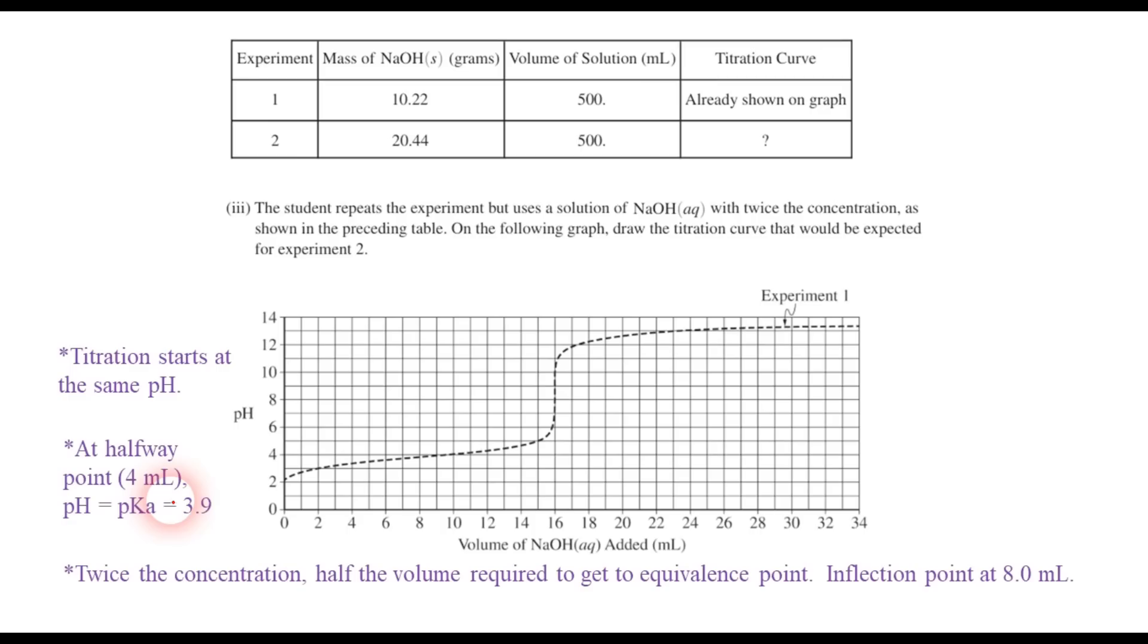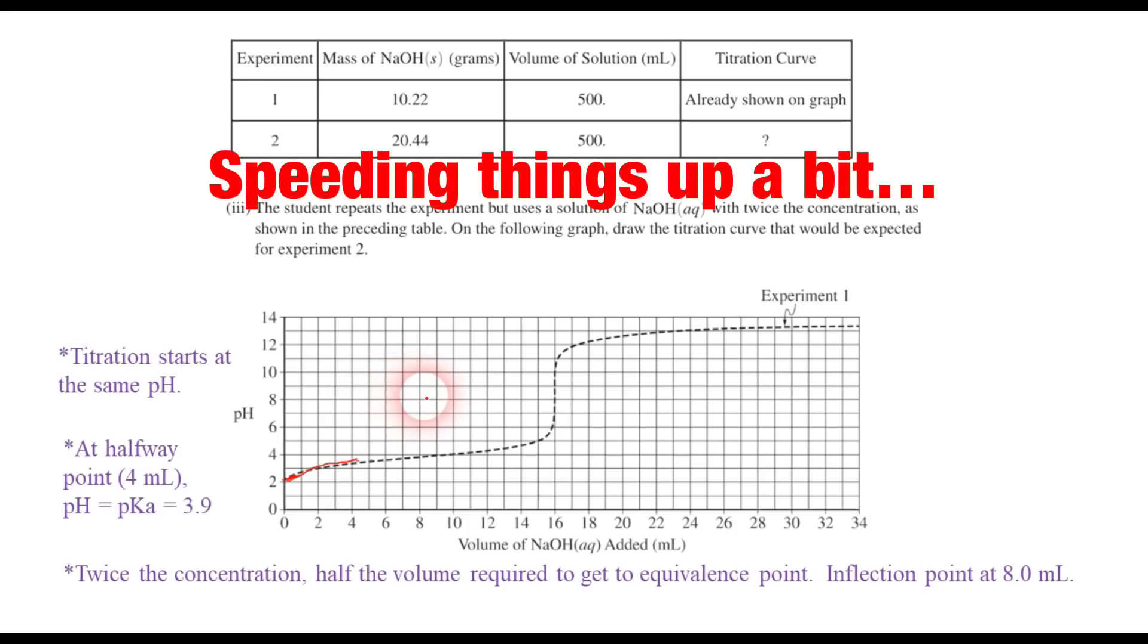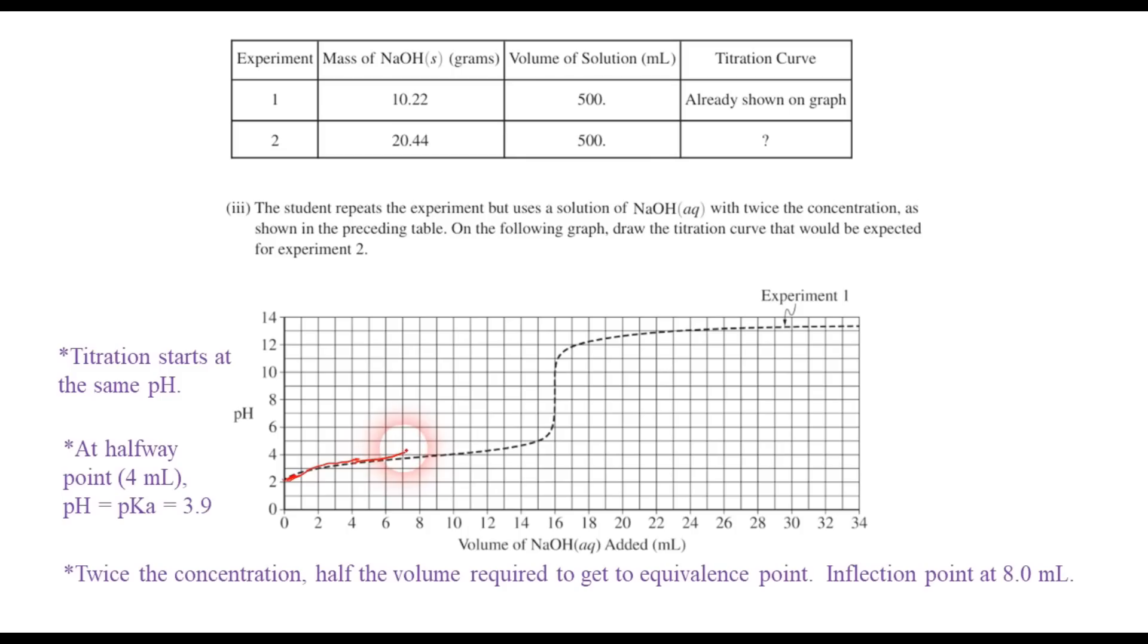And so when we draw this titration curve, and it's a little hard for me to draw on the screen here, but it should start here. And we know that at 4 milliliters, the halfway point, we should have 3.9, which should be right around here. So it's going to move up kind of like it did before. And then we should get that inflection point at 8 milliliters right around here, where it goes up pretty quickly around pH 8. And then it's going to continue to go up after that. So this is a pretty bad looking curve, but that's the basic idea there. Hopefully on paper, you can draw that a little bit better than I did. Of course, that inflection curve should look a little straighter than what I have right there. But those are the ideas there.